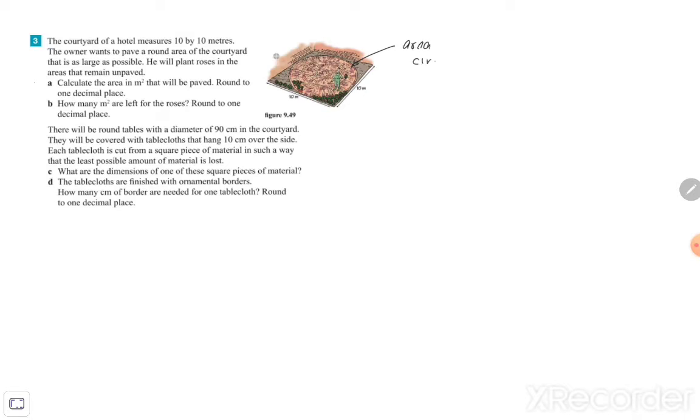The area of a circle is π times the radius to the second power. So with exercise A, if we know that this measurement is 10 centimeters, the half is the radius, so π times 5 to the second power. The answer here is 78.5 square meters.